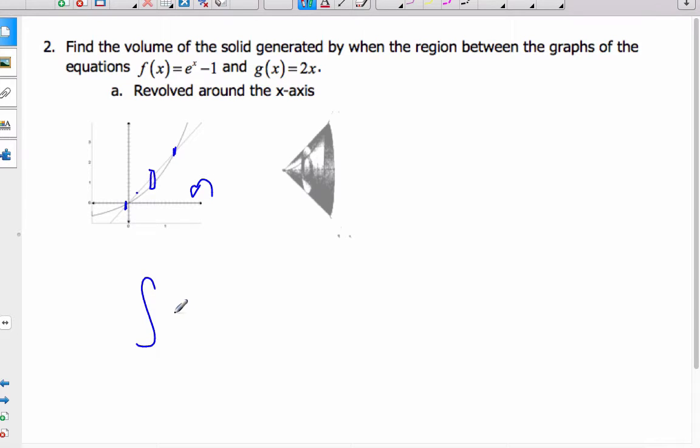And the volume is going to be pi times the radius squared, because that's the area. In order to do it, I'm going to take the outside radius,